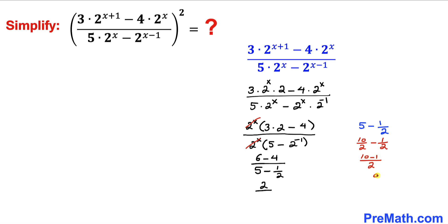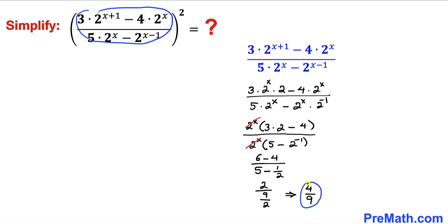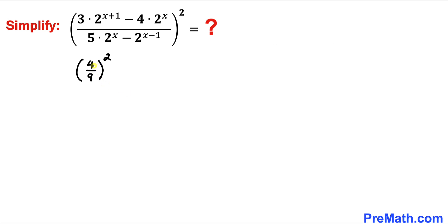So 5 minus 1 over 2 could be written as 9 divided by 2. Therefore I'm going to write down 9 divided by 2. Now let's multiply: the numerator is 2 and the denominator is 9 over 2, so 2 times 2 over 9 gives us 4 divided by 9. Therefore the whole part inside this parentheses has been simplified to 4 divided by 9, and I'm going to replace this whole thing by 4 divided by 9, whole power 2.